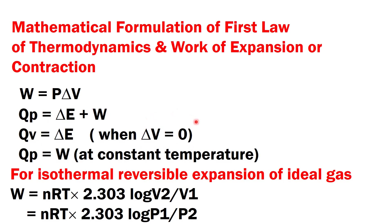At constant volume, when there is no change in volume (ΔV = 0), the heat absorbed at constant volume equals only the change in internal energy. At constant pressure, when there is no change in internal energy — since internal energy is a function of temperature — ΔE equals zero, and the heat exchanged at constant pressure equals only the pressure-volume work.